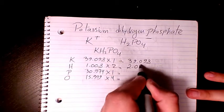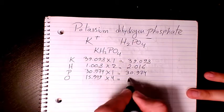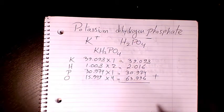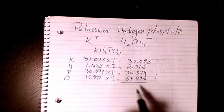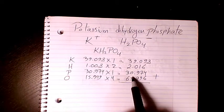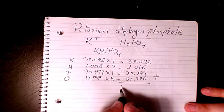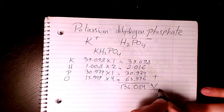Then you need to add them all. So we have 39.098 plus 2.016 plus 30.974 plus 63.996, that makes it 136.084 grams per mole. So that's the molar mass or molecular weight of potassium dihydrogen phosphate.